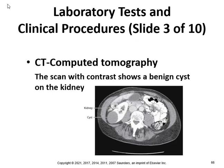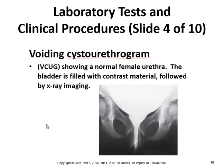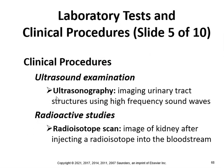On a CT scan, you can see a cyst on the kidney. A voiding cystourethrogram (VSUG) shows a normal female urethra with the bladder filled with contrast material, followed by x-ray imaging. Ultrasonography images urinary tract structures using high-frequency sound waves.